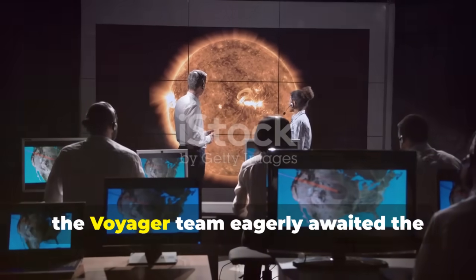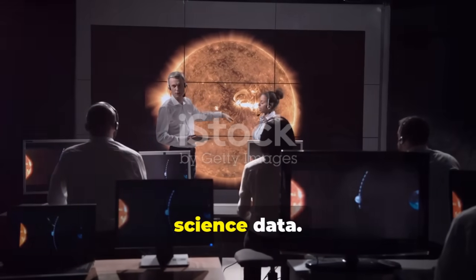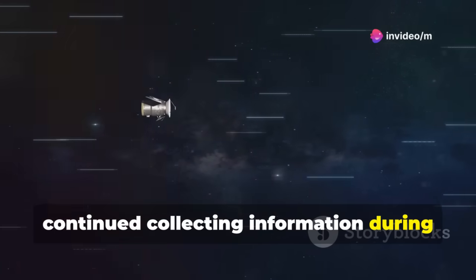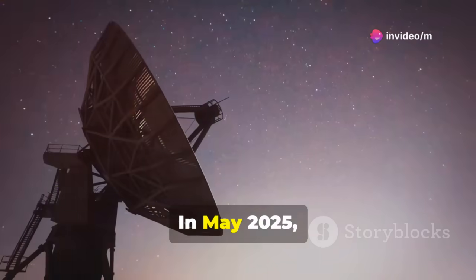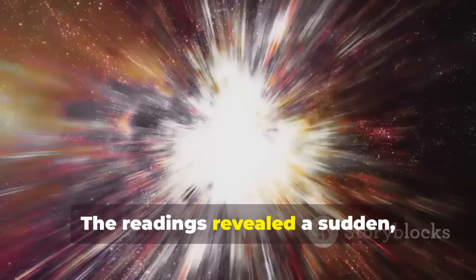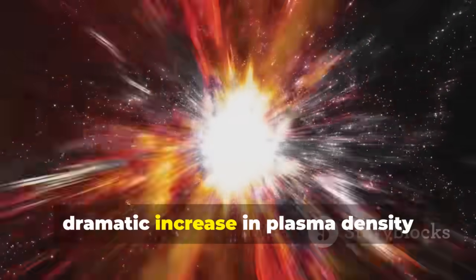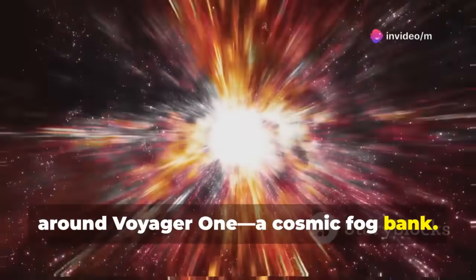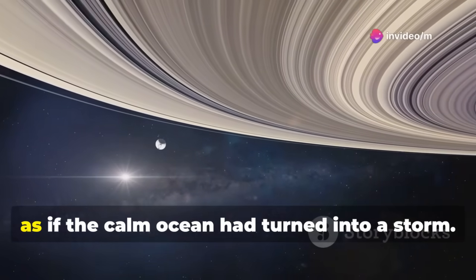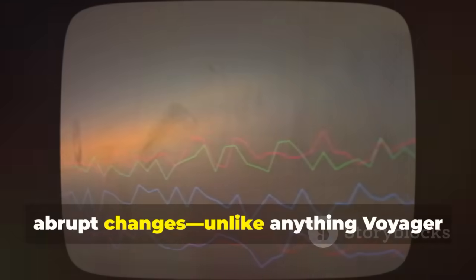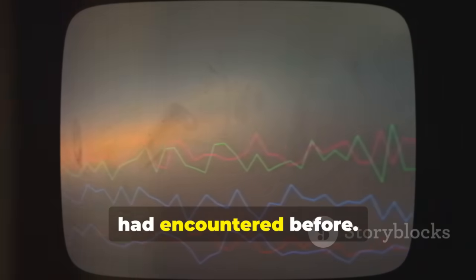With communications restored, the Voyager team eagerly awaited the science data. The spacecraft's instruments had continued collecting information during the blackout. In May 2025, the first batch of stored data streamed back to Earth. The readings revealed a sudden dramatic increase in plasma density around Voyager 1, a cosmic fog bank. The interstellar magnetic field surged, as if the calm ocean had turned into a storm. These were powerful, abrupt changes, unlike anything Voyager had encountered before.